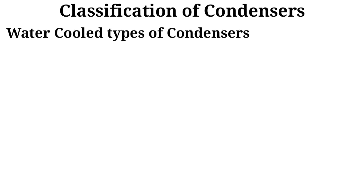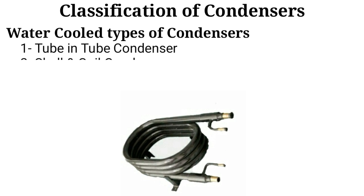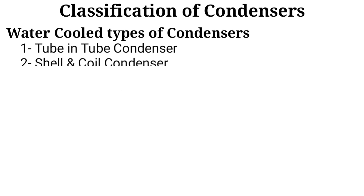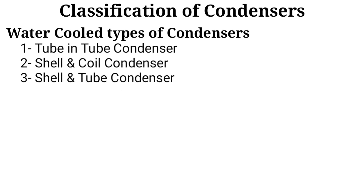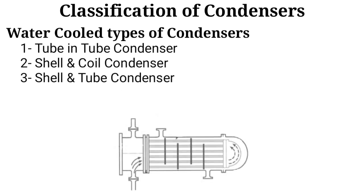There are three types of water-cooled condensers: number one, tube-in-tube condenser; number two, shell and coil condensers; and number three, shell and tube condensers.